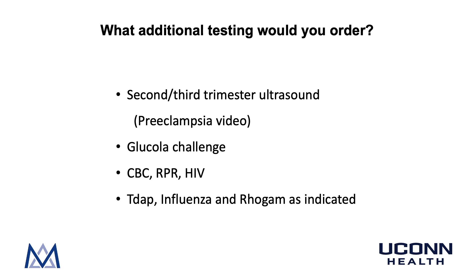In summary, the additional testing to order includes a 2nd or 3rd trimester ultrasound — for details on fetal biometry and amniotic fluid index measurements, please see our preeclampsia video. She would also have her glucola challenge, and at the same time a CBC, RPR, and HIV. These are routine, and as mentioned, she would be offered Tdap, influenza, and Rho-gam injections as indicated.